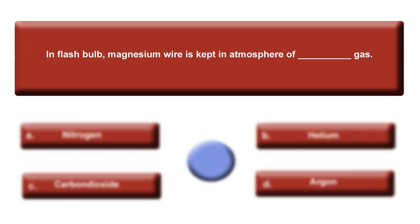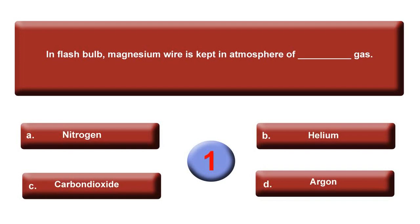Next question: In the flash bulb, magnesium wire is kept in the atmosphere of which gas? Option A: Nitrogen. Option B: Helium. Option C: Carbon dioxide. Option D: Argon. Your time is up. The answer is A, Nitrogen.